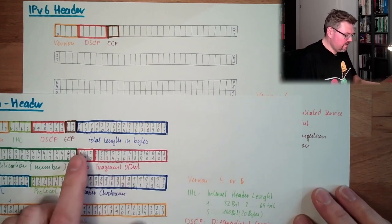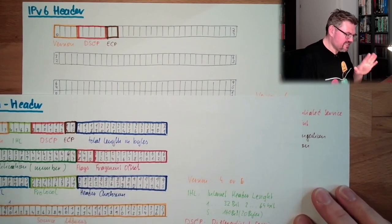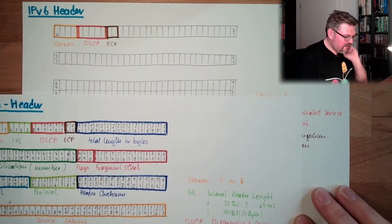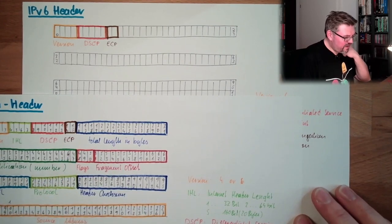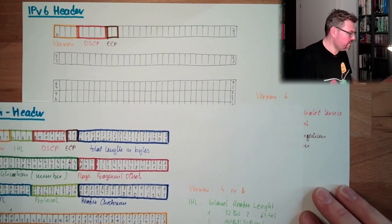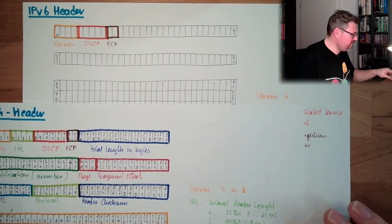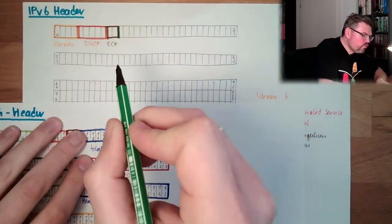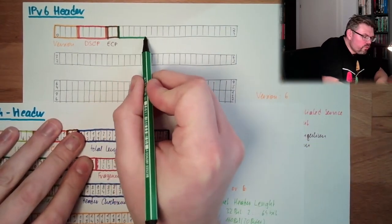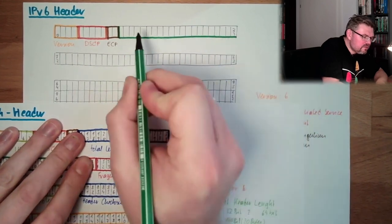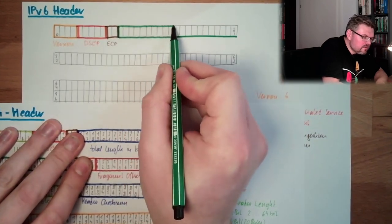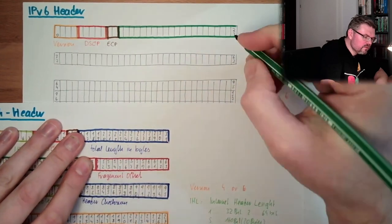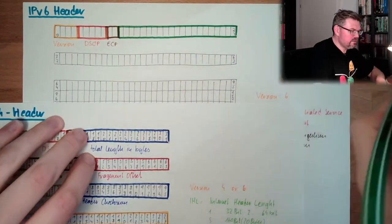And then this total length, this is not here, this is not here. We have here now a so-called flow label. This flow label are the missing 20 bits. This is the flow label.